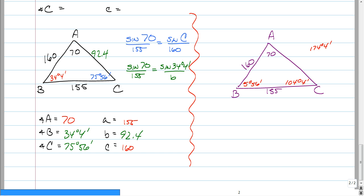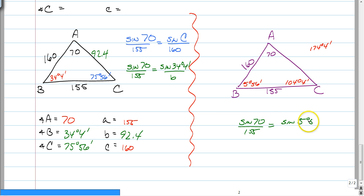Now do the Law of Sines one more time for the second triangle. You still have sine of 70 over 155, but now equal to sine of 5 degrees and 56 minutes over little b. Cross multiply and little b in this triangle equals 17.1. Make sure you have all six pieces labeled for both triangles.